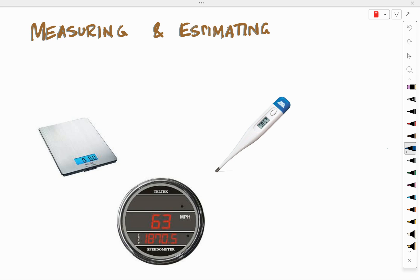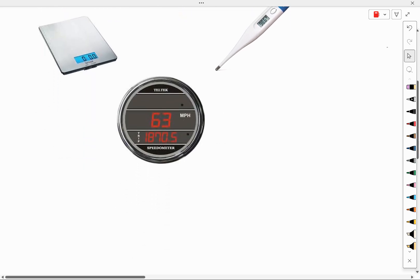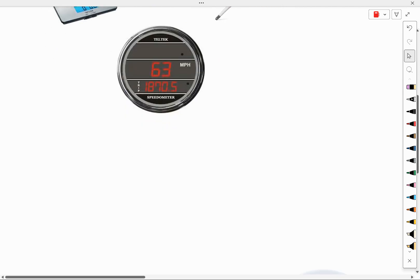The second device looks like a digital thermometer that's telling temperature in degrees Fahrenheit. And the third object looks like a digital speedometer measuring in miles per hour and maybe also tracking miles.